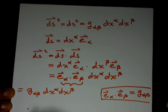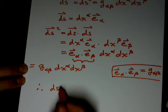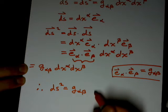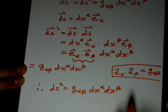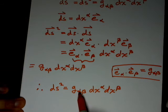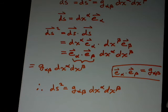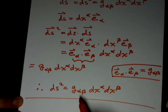So this is your line element that shows you how nearby distances are related. This ds squared equals g alpha beta dx super alpha dx super beta, and there's a summation over alpha and beta, because you've got a lower index here, higher index, lower, higher, and this is your line element that is often used in general relativity.